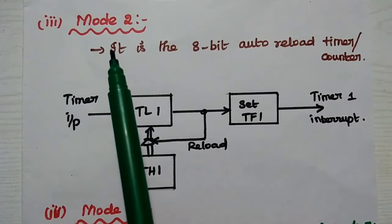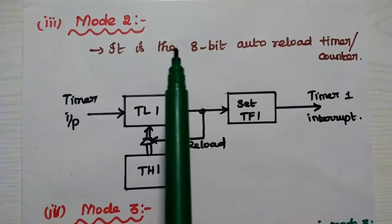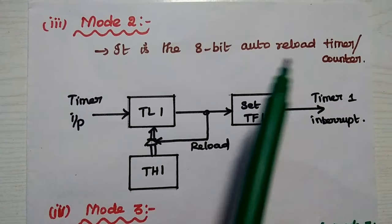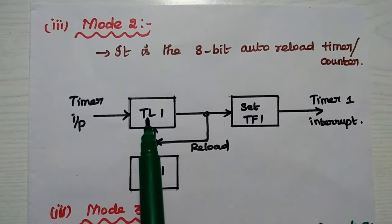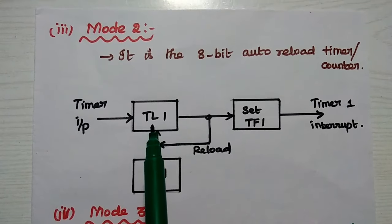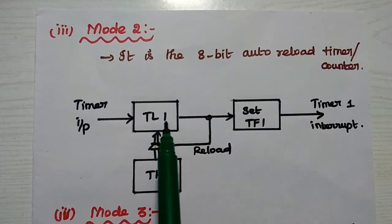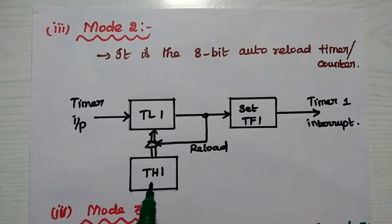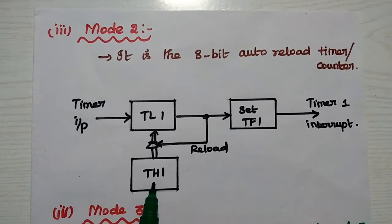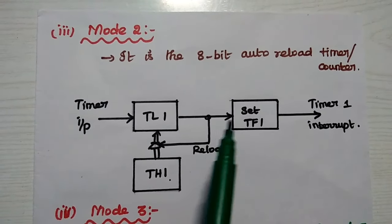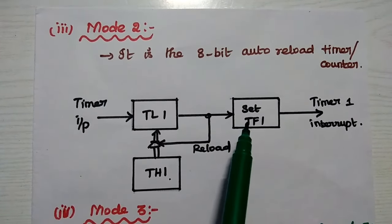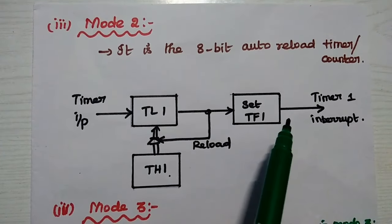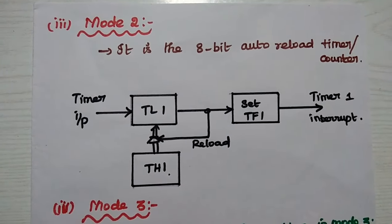Mode 2 is the 8-bit auto-reload timer/counter. The low byte timer register TL1 is used, and it is automatically reloaded using TH1 — the reload data is stored in TH1. The timer overflow flag must be set to 1 to generate an interrupt at the microcontroller.